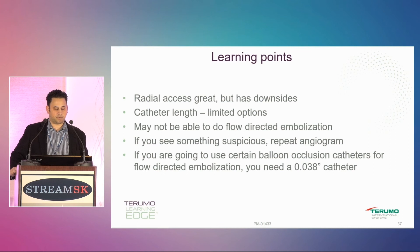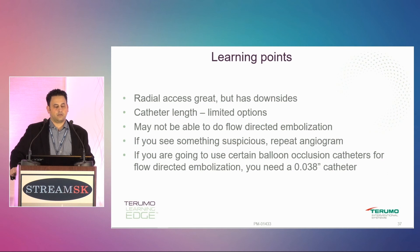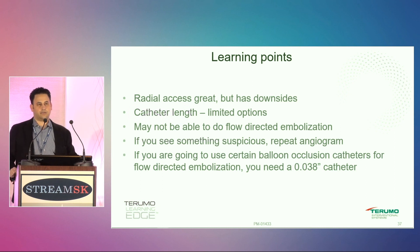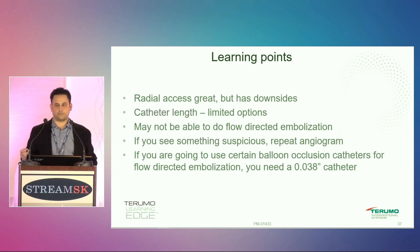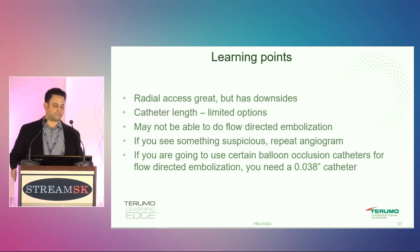If you're going to use certain balloon occlusion catheters, they will only fit through a 0.038 inch lumen — it doesn't matter if you're using four or five French, but if you have a 0.035 compatible lumen they won't fit. Know your equipment beforehand. It takes probably about 25 to 40 cases to really get things down and get comfortable. You're going to go through a lot of trial and error — catheters that aren't long enough, wires that aren't long enough — and hopefully these conferences help with that.